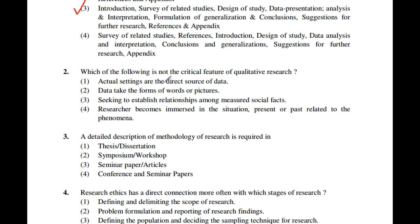Question number 2: Which of the following is NOT a critical feature of qualitative research? The options include: actual settings as direct source of data, data in words or pictures, seeking to establish relationships among measured social facts, and researcher becoming immersed in the situation. The correct answer is the third one — seeking to establish relationships among measured social facts — as that belongs to quantitative research.